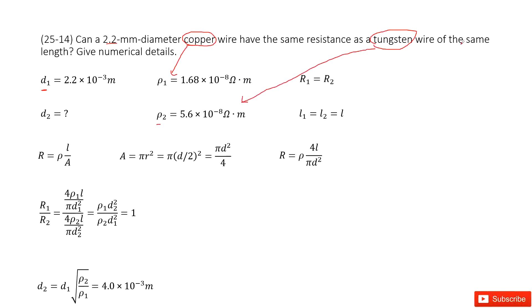And also it tells us the same length, right? The same length, that means L1 equal to L2. Then we need to find the diameter for the second resistance, D2.